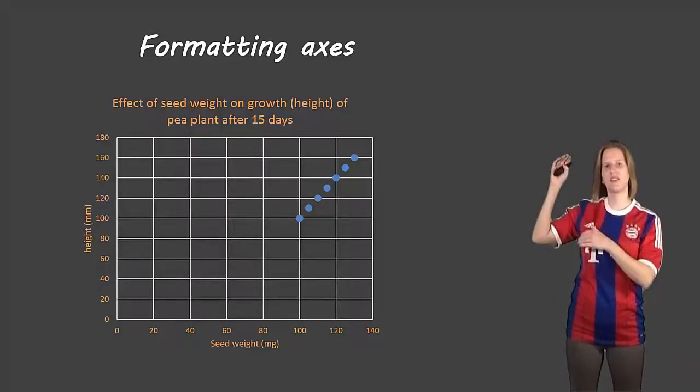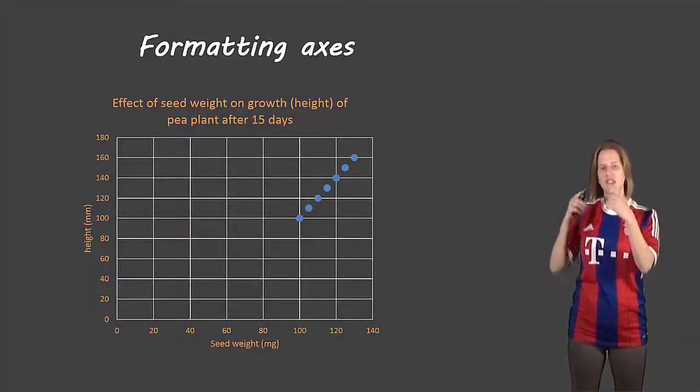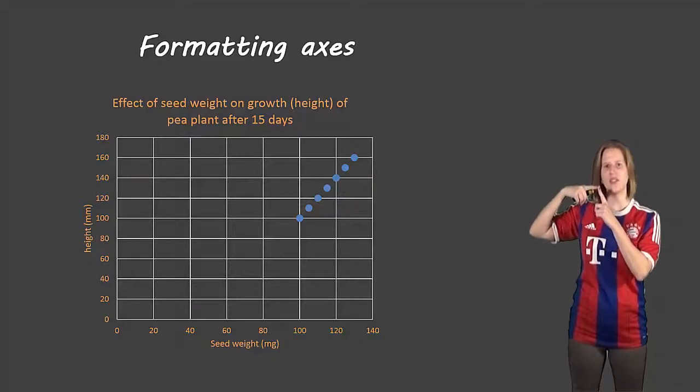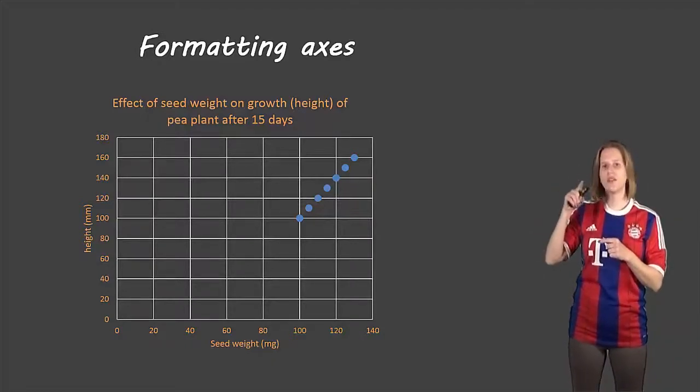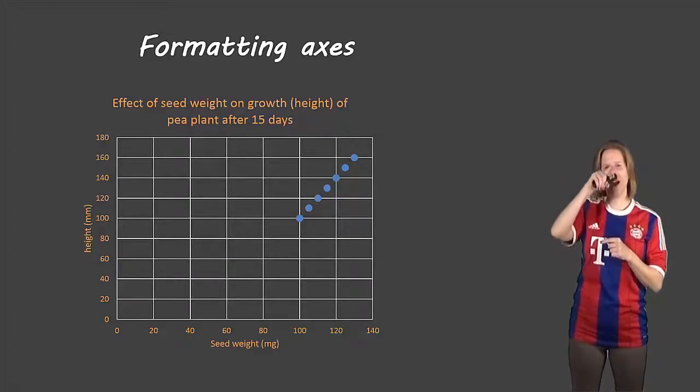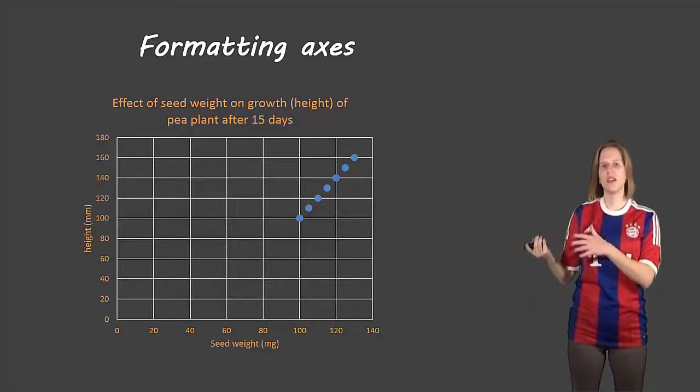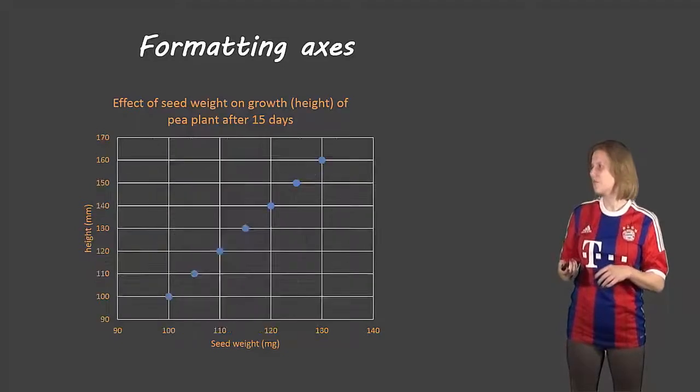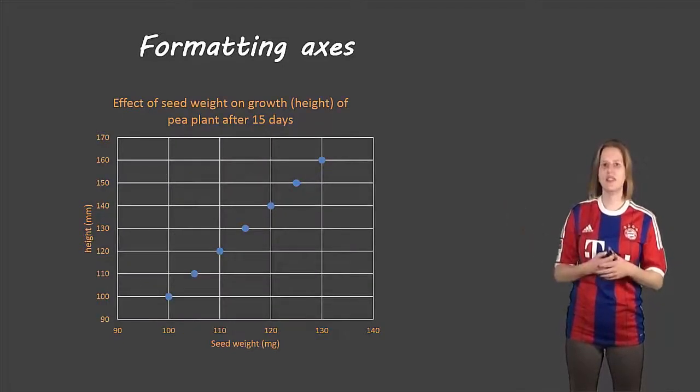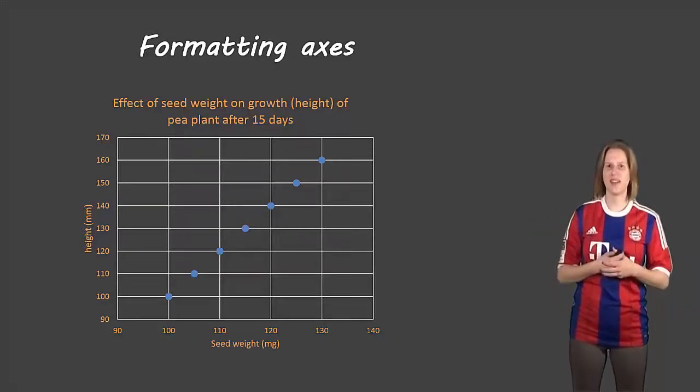If you're doing it by hand, you'll just put zero at the origin, that's where those two lines connect to each other. Where your x and y axis connect to each other, you'll put a zero there, you'll draw a little squiggly line, and then you can start at the number where you want to go. If you're using a computer, it'll just shift the values for you without that little squiggly line. So here we can see our data much better. We have a better idea that yes, it does in fact look linear, and so we have a better idea of what's happening in our experiment.